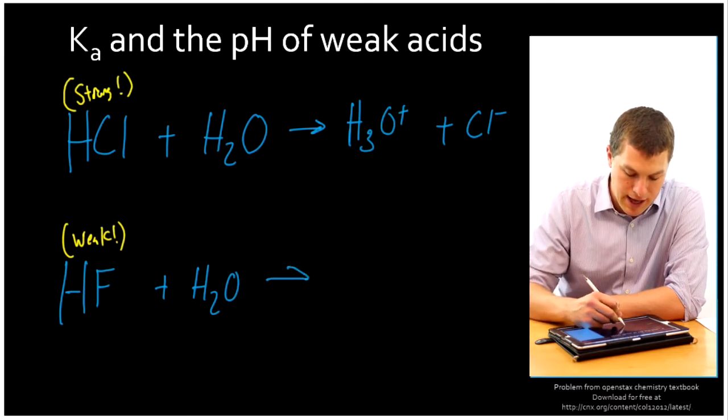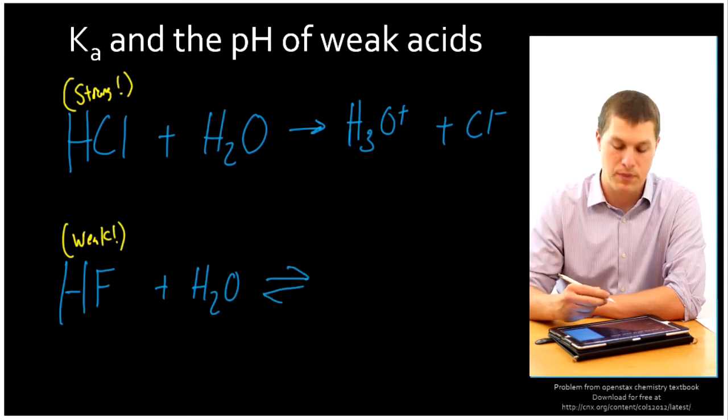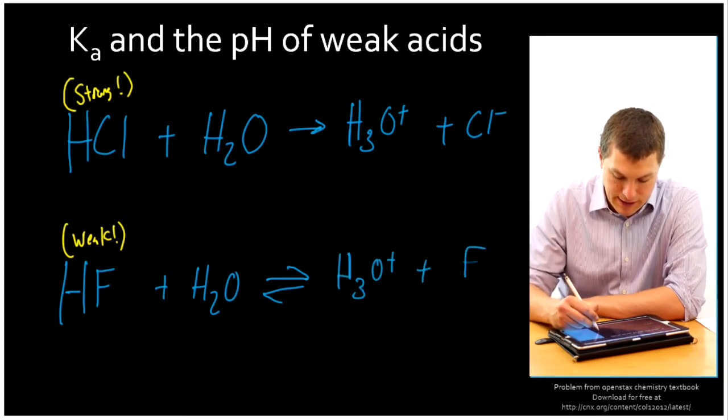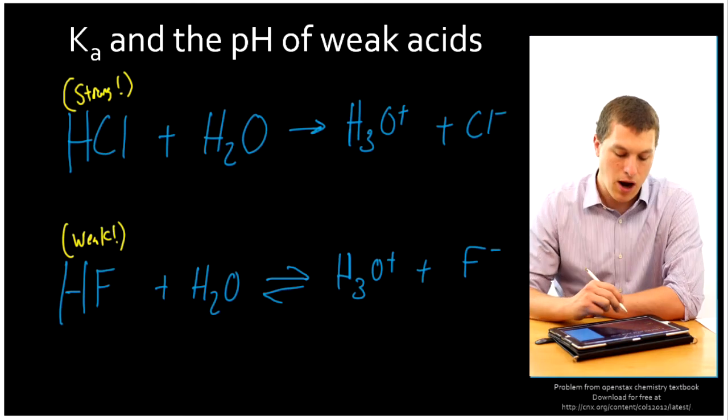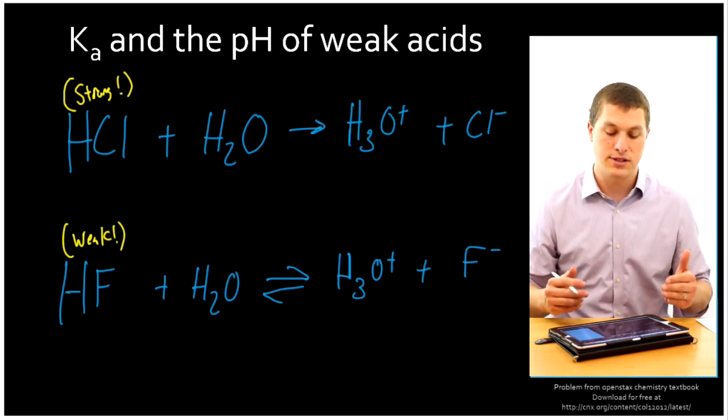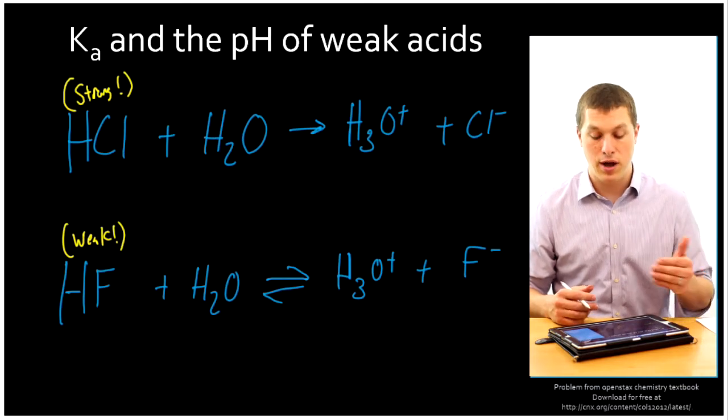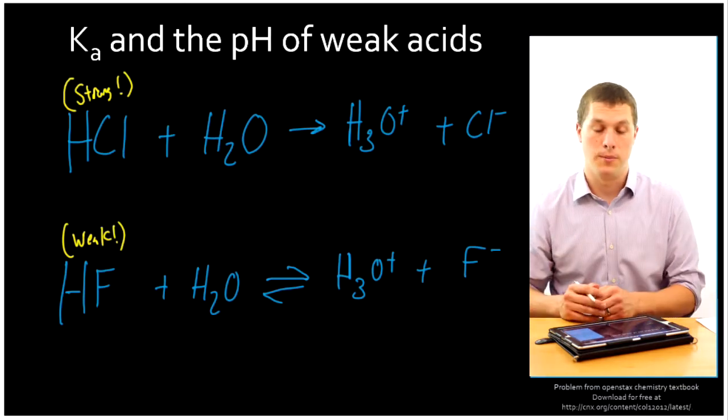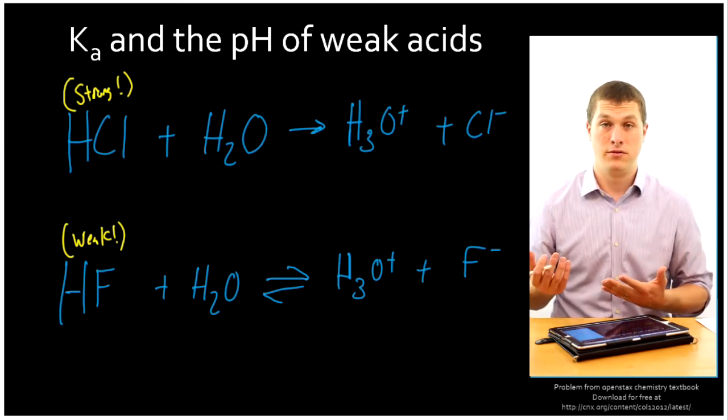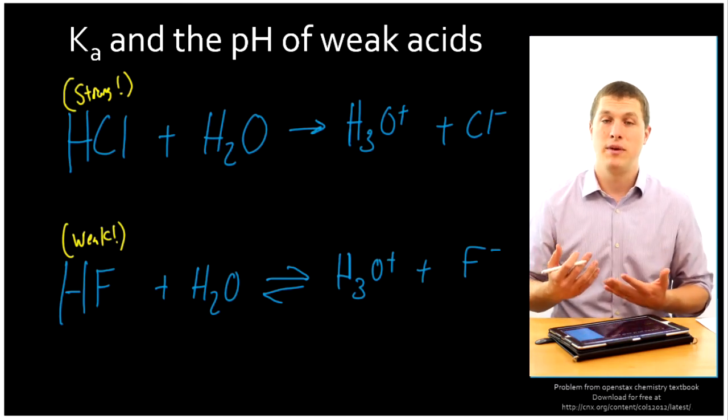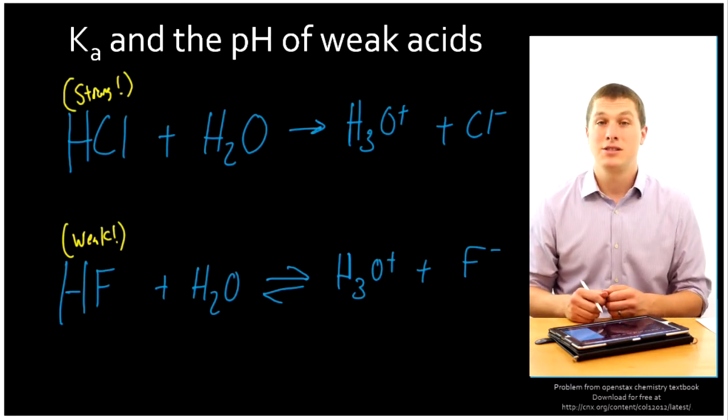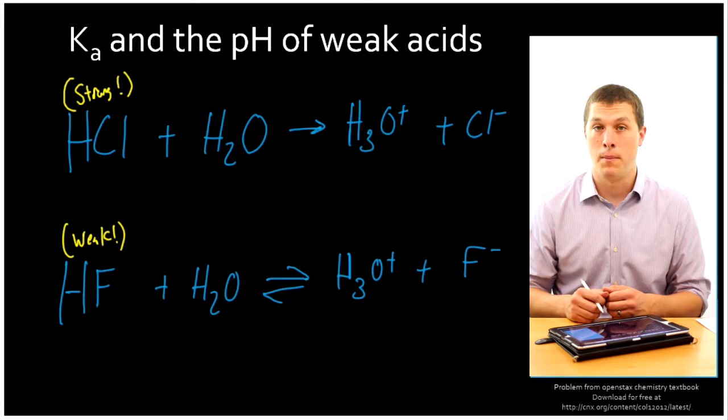On the other hand, if I take my weak acid, HF, I have to use forward-backwards arrows, and I still get H3O+, plus F-, but not all of my HF goes forward and is dissociated. So if I put in a thousand HCls, I'll get out a thousand H3O+, all of it splits apart. If I put in a thousand HFs, maybe I'll only get out 500 H3O+, and that's what makes it a weak acid. It doesn't completely dissociate. It doesn't always split up, and that changes how we have to do our math.